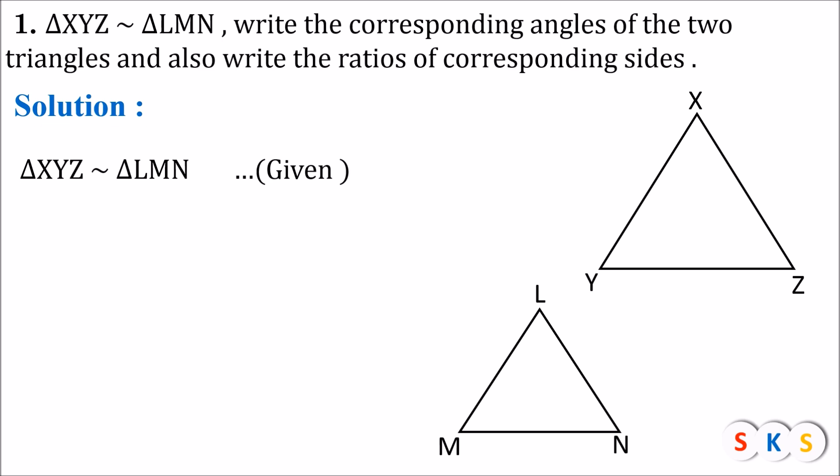Here we have two triangles XYZ and LMN. Triangle XYZ is similar to triangle LMN. First we will write pairs of corresponding angles. Angle X and angle L are congruent to each other. How do we know? The first letter of triangle XYZ is X and the first letter of triangle LMN is L, therefore angle X is congruent to angle L. Reason: CAST — corresponding angles of similar triangles.